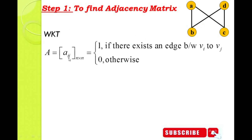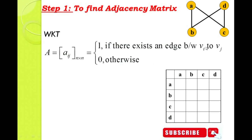We consider 4 vertices for both rows and columns. For A to A: there is no edge between A and A, so we assign value 0. For A to B: there is one edge between A and B, so we assign value 1. For A to C: there is one edge, so assign value 1. For A to D: there is no edge between A and D, so we assign value 0.